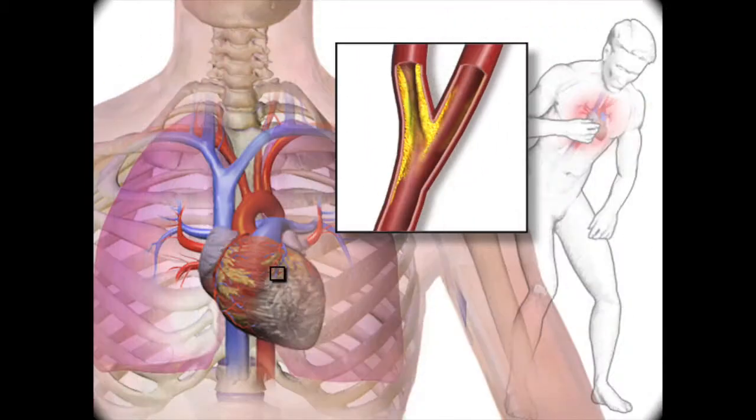The direct impact of angina is on the coronary arteries in the heart. The coronary arteries blocked by plaque are not functioning as they should, and thus the heart does not receive an adequate amount of oxygen, resulting in pain.